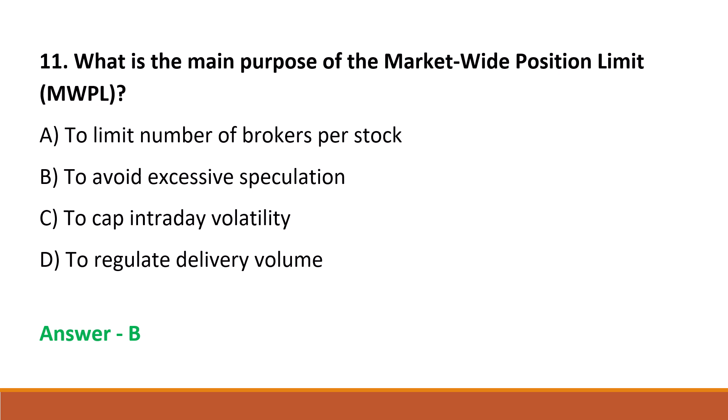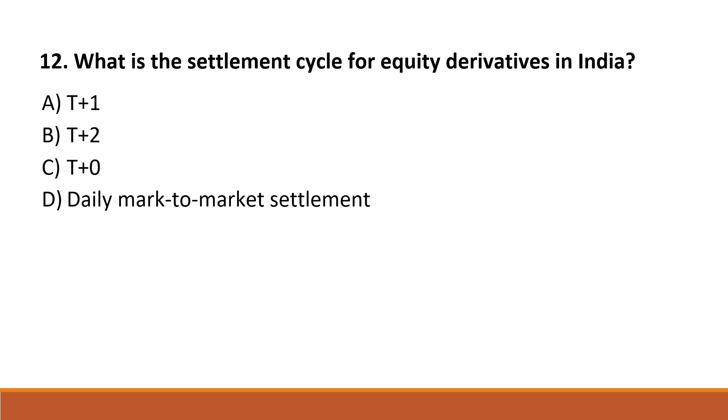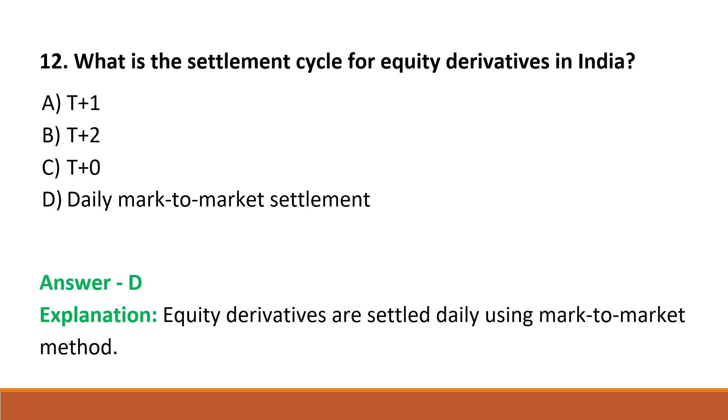Next question: what is the settlement cycle for equity derivatives in India? Option A: T plus 1. Option B: T plus 2. Option C: T plus 0. Option D: daily mark-to-market settlement. The correct answer is Option D, daily mark-to-market settlement.